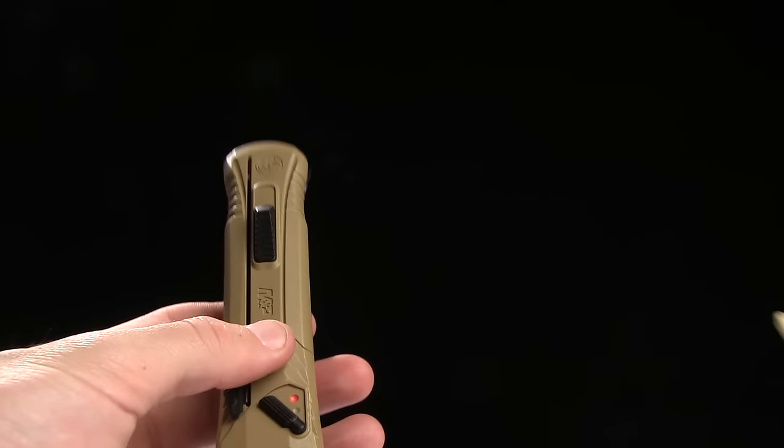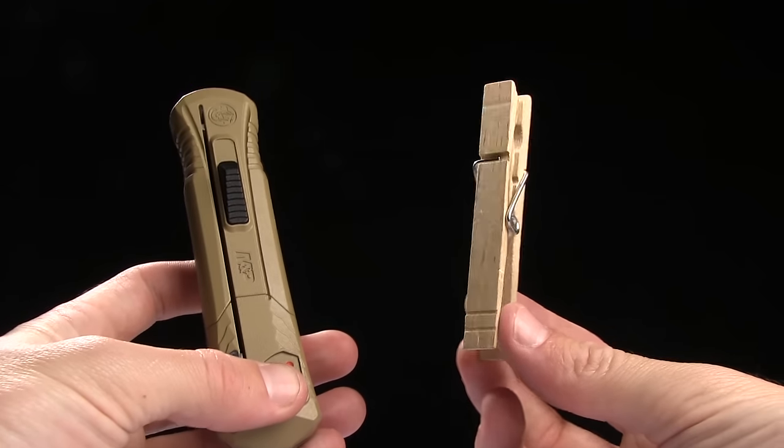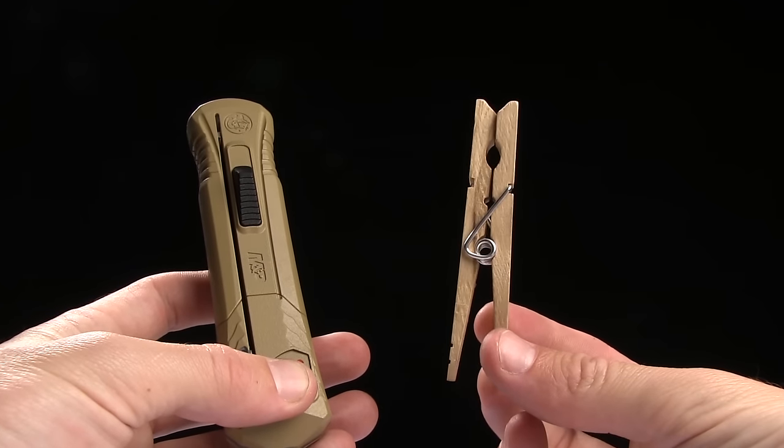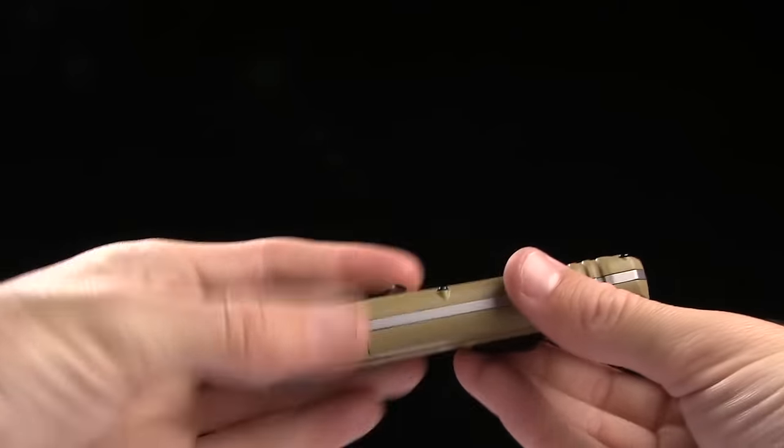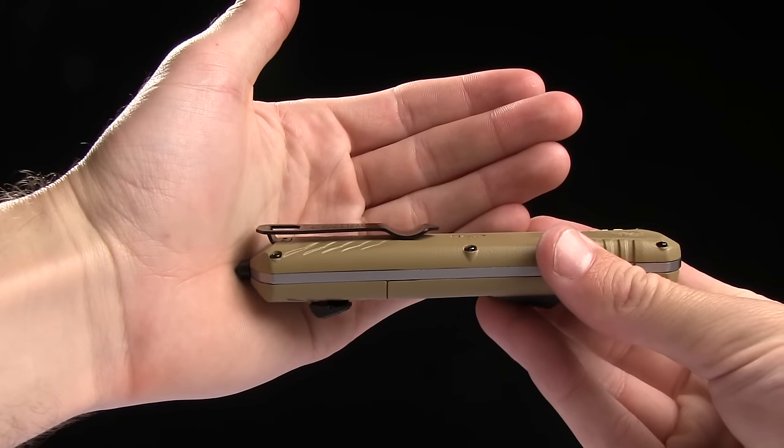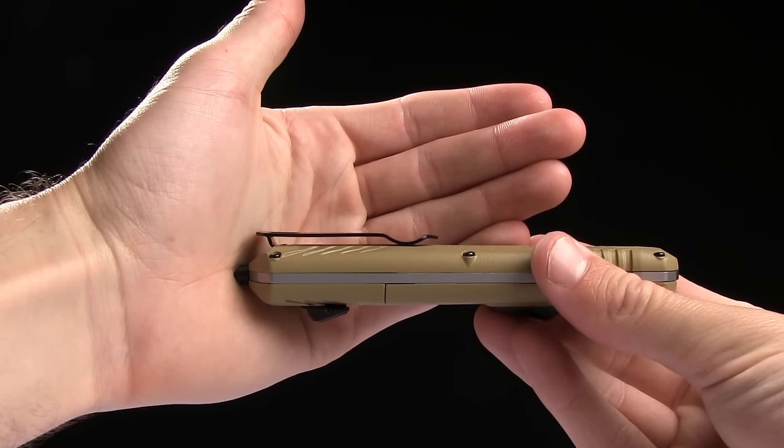And overall weight is 5.87 ounces. Here's your tactical clothespin for size comparison. And you've got a pocket clip for tip down right or left handed carry.